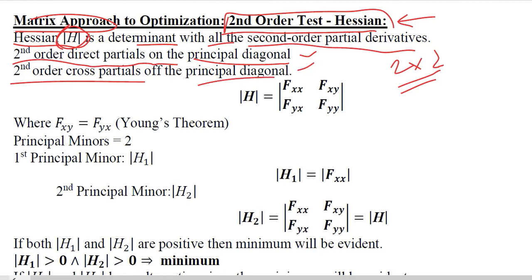This is something we will observe in the structure of this Hessian determinant. You can see that the principal diagonal contains the second-order direct partial derivatives.